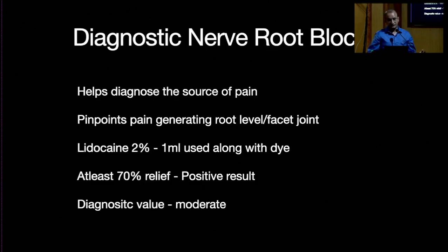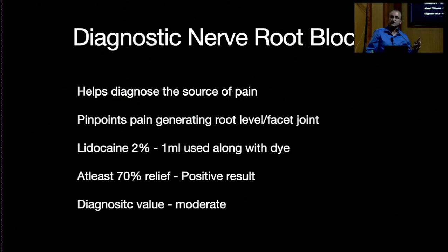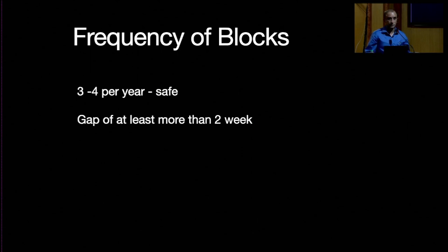For diagnostic nerve root blocks, they help diagnose the source of pain and pinpoint the pain-generating root level or facet joint. Use lidocaine, a short-acting drug, in a small amount of 0.5 to 1 ml. If the patient has 70% or more pain relief, we consider it a positive test. The frequency of blocks that can be given safely is about 3 to 4 per year at a particular level.